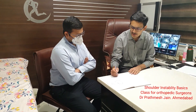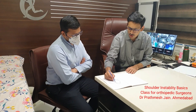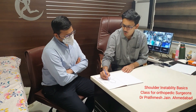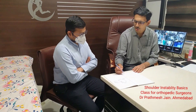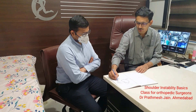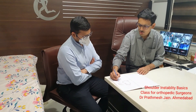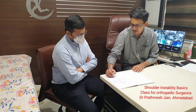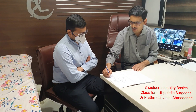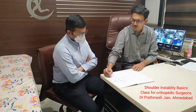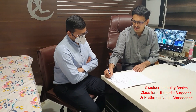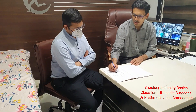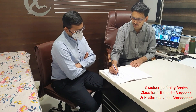If you have dislocations again and again, along with the labrum some part of the bone may also be involved — that is called a bony Bankart. Bony Bankart is usually of two types: one is an attrition Bankart and one is a fragment Bankart or a fracture. If it is a fracture of the glenoid along with the labrum, then you need to do an arthroscopic repair involving this.